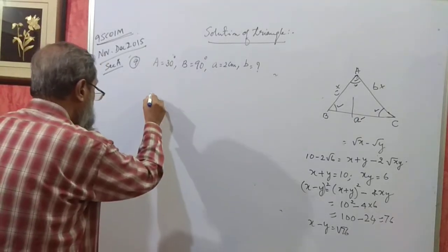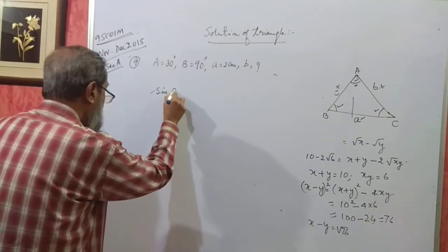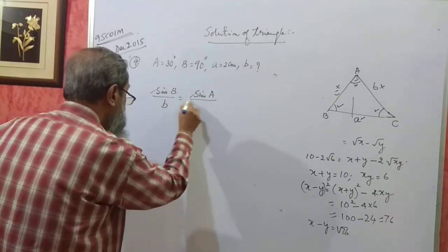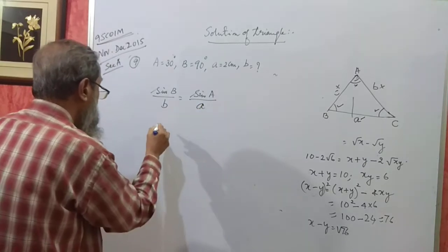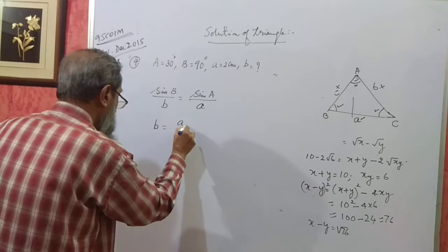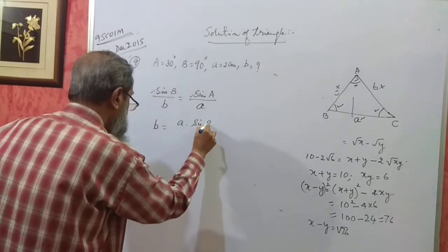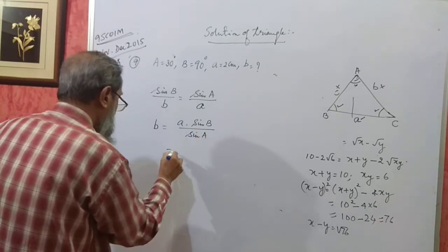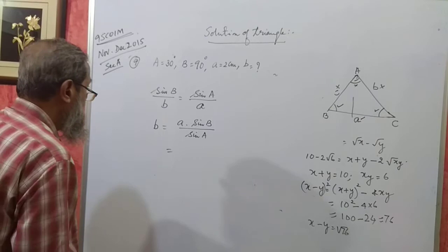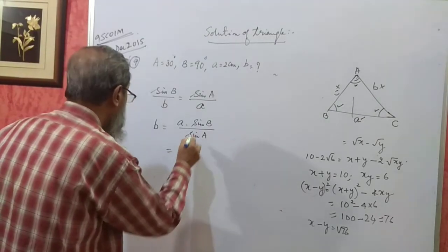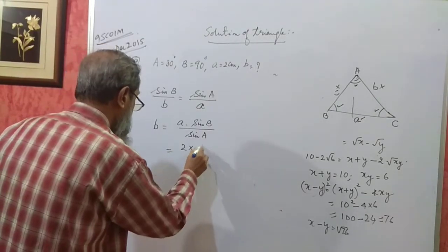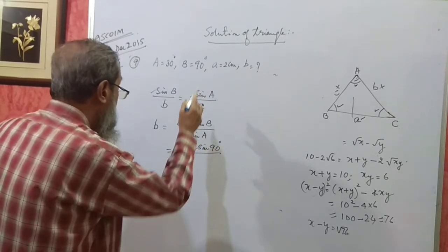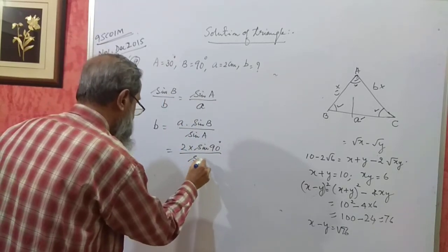It is very simple. sin B by B is equal to sin A by A. So B will be equal to A into sin B divided by sin A. A is 2 centimeters. sin B is sin 90 divided by sin A which is 30 degrees.